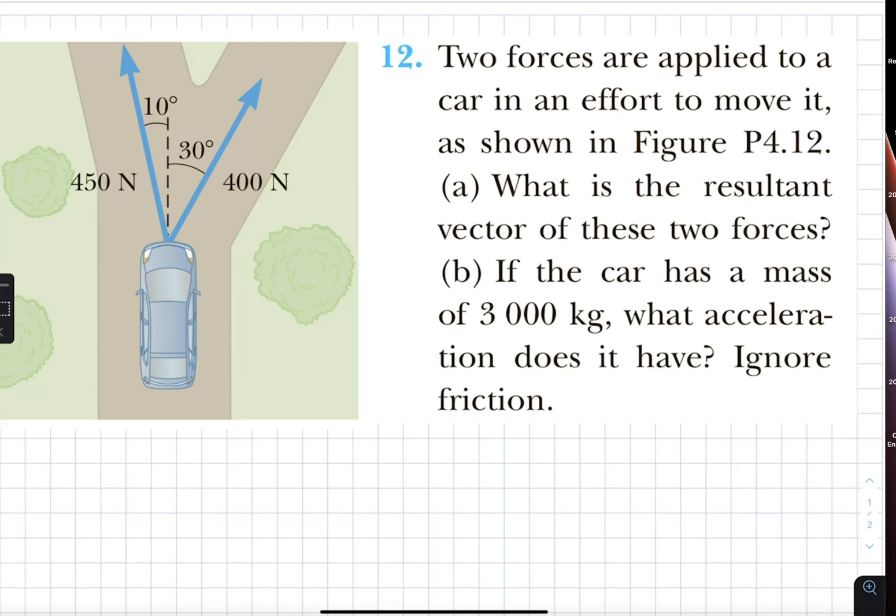We are only interested in the net forces in the horizontal direction. Vertically, there's force of gravity straight down and then normal force straight up from the road. They will equal each other out, and there will be no net force vertically. However, horizontally, there is net force.